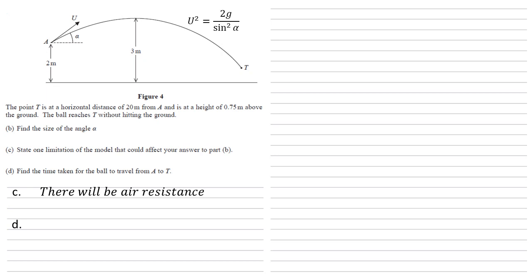Now for part D, we need to find the time taken for the ball to travel from A to T. Using our U squared formula that we worked out earlier, we know that U is equal to the square root of 2g over sine squared alpha, which is equal to root 2g over sine alpha.